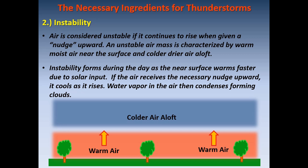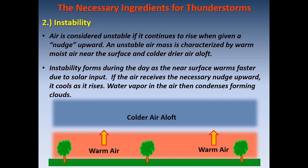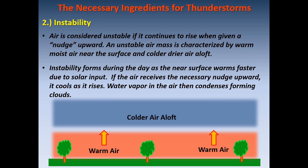The second ingredient is atmospheric instability. Air is considered unstable if it continues to rise when given a nudge upward. An unstable air mass is characterized by warm moist air near the surface and colder dry air aloft.